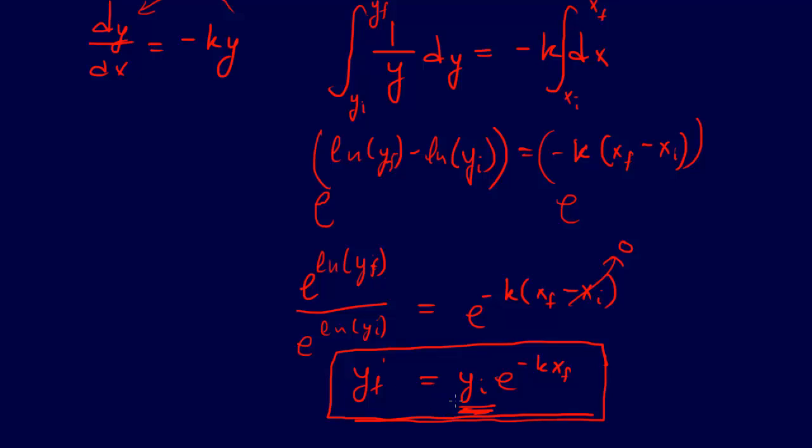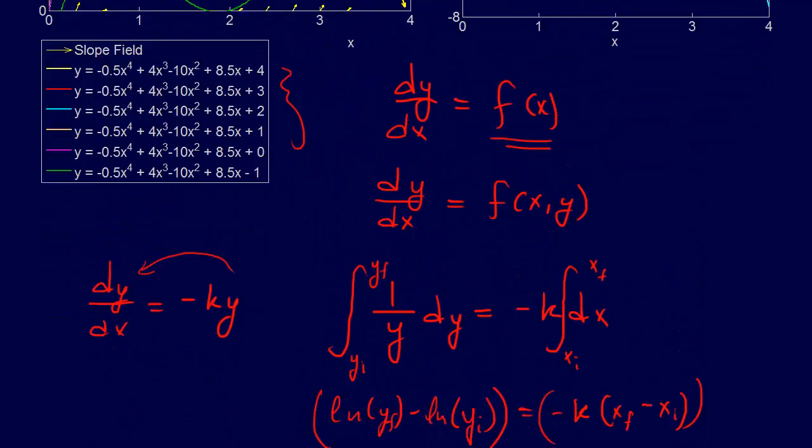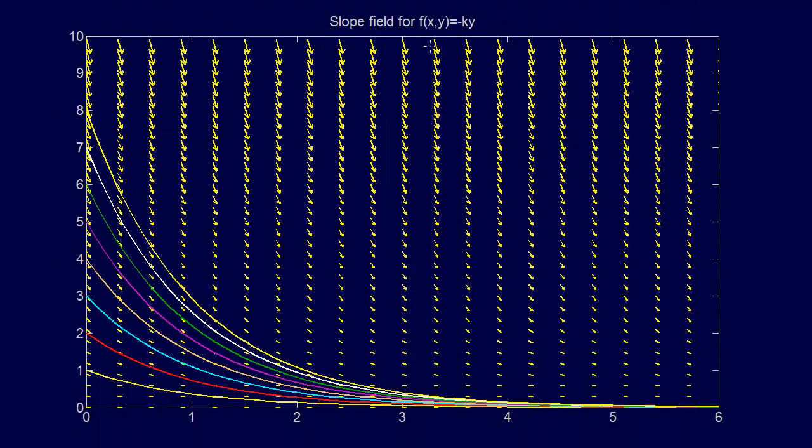If we didn't have the starting point, we still could have solved this with an indefinite integral and then plugged in the information we had, so we could figure out which point it went through in a slope field. If we plot out the slope field for f(x,y) = -ky, this is what it looks like. Let's say the initial amount of substance equals 3. If that's true, then this would be our solution to this ordinary differential equation.